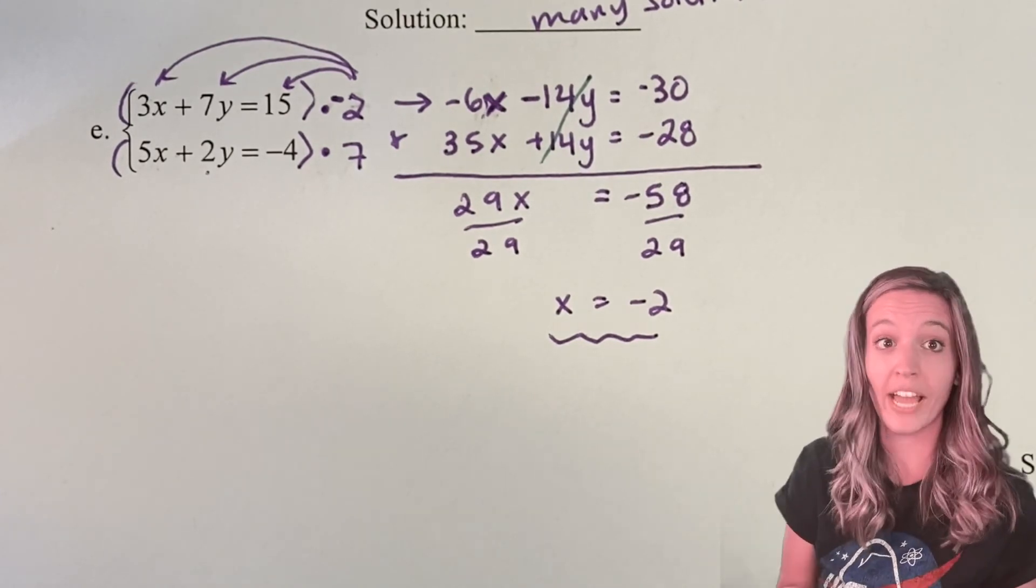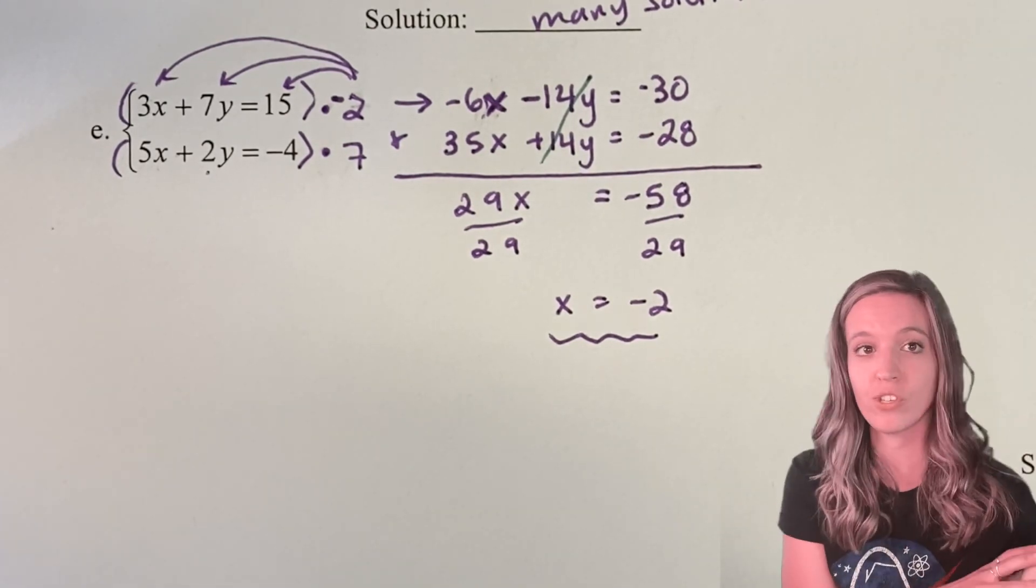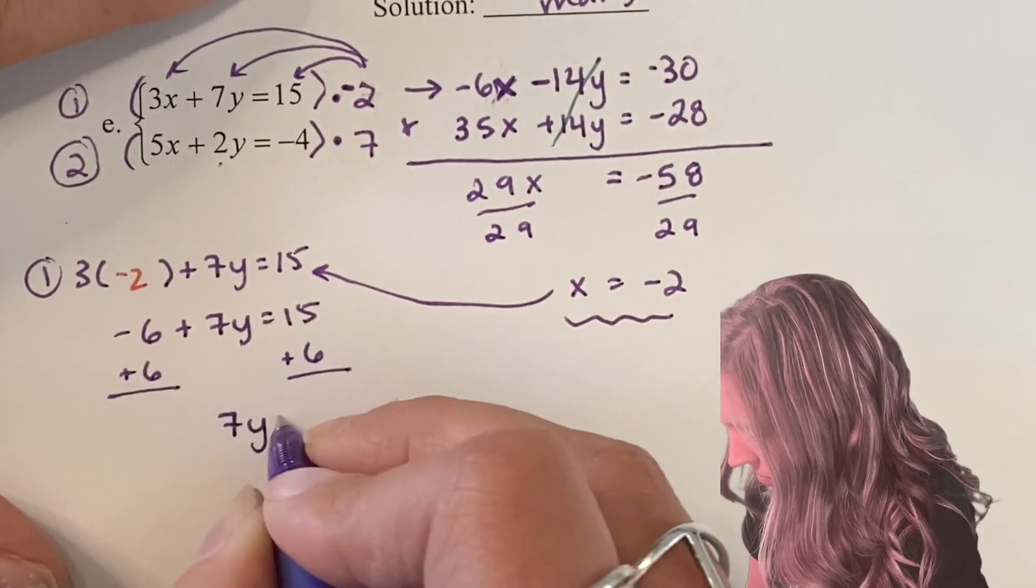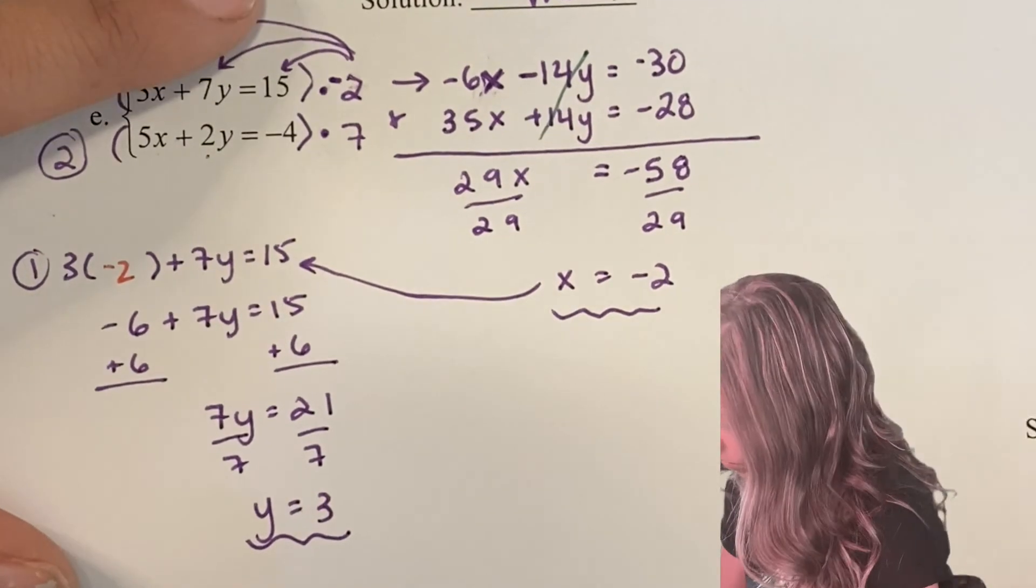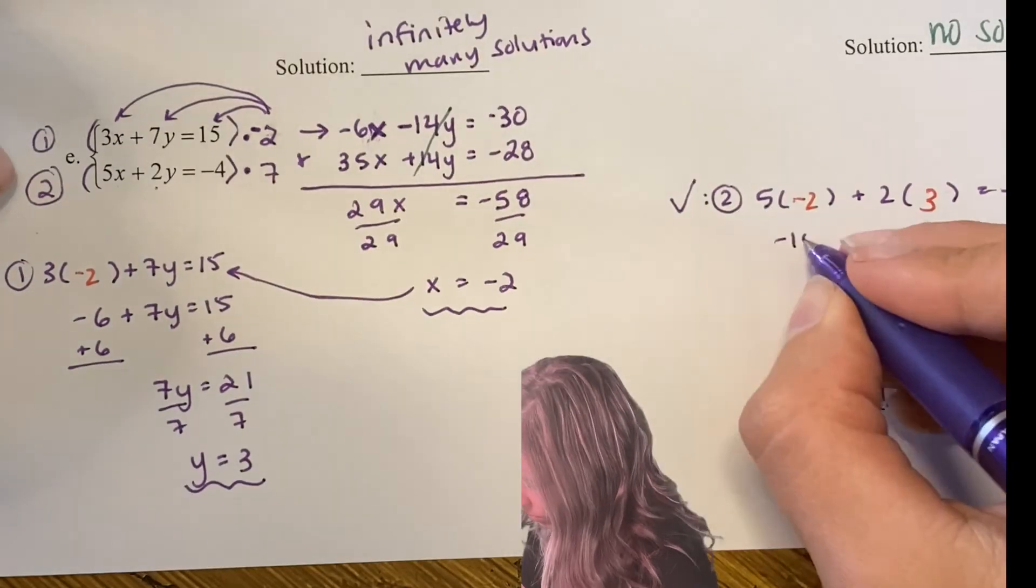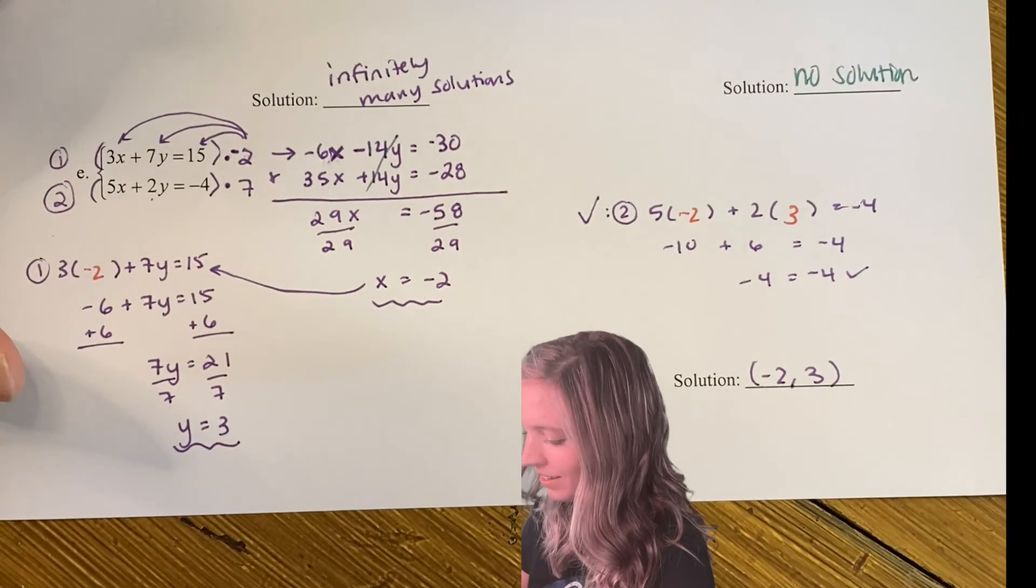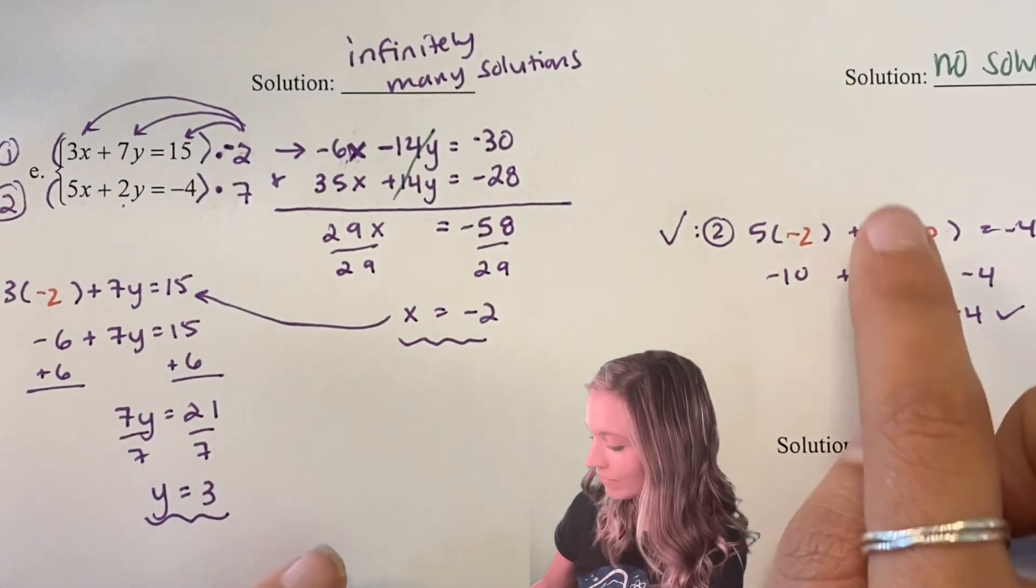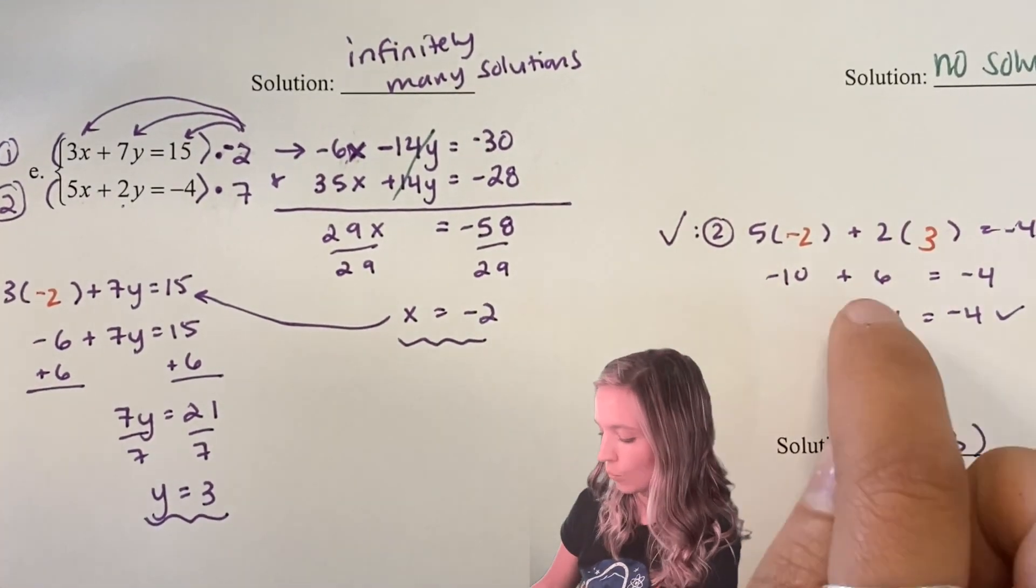If you did it a different way, don't worry, we're going to end up with the same answers in the end. So it looks like I got (-2, 3) as my solution. And I even checked it in that second equation and it worked out.